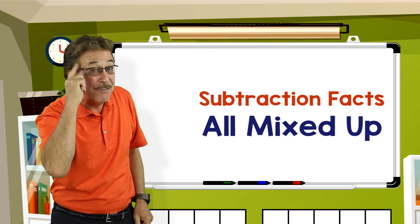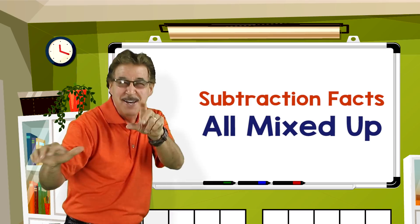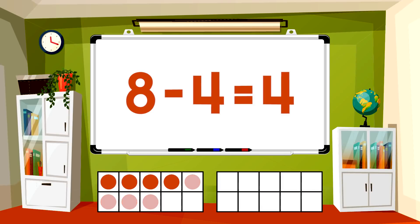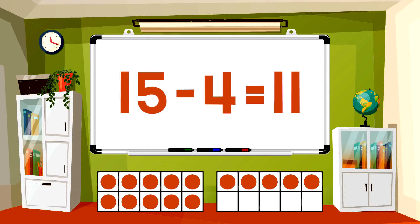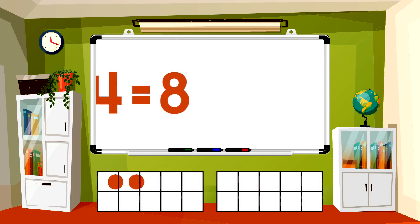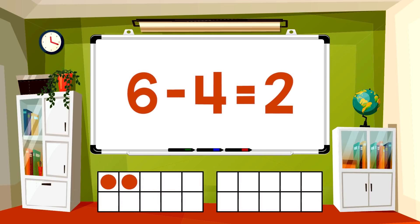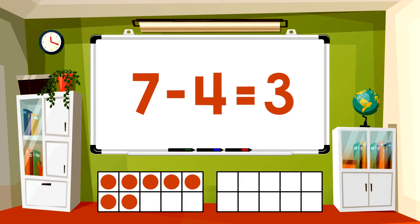Let's learn our subtraction facts, all mixed up. Subtract 4 from each number. 8-4 equals 4. 15-4 equals 11. 12-4 equals 8. 6-4 equals 2. 7-4 equals 3.